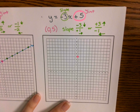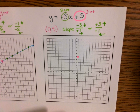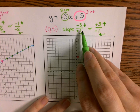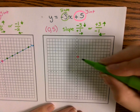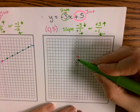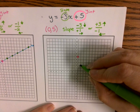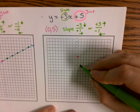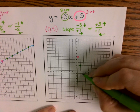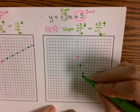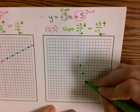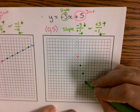Starting from (0, 5), I'm going to go down three and then to the right one. Down three, right one takes me to (1, 2). Down three, right one takes me to (2, -1). Down three, right one takes me to (3, -4). Down three, right one takes me to (4, -7).